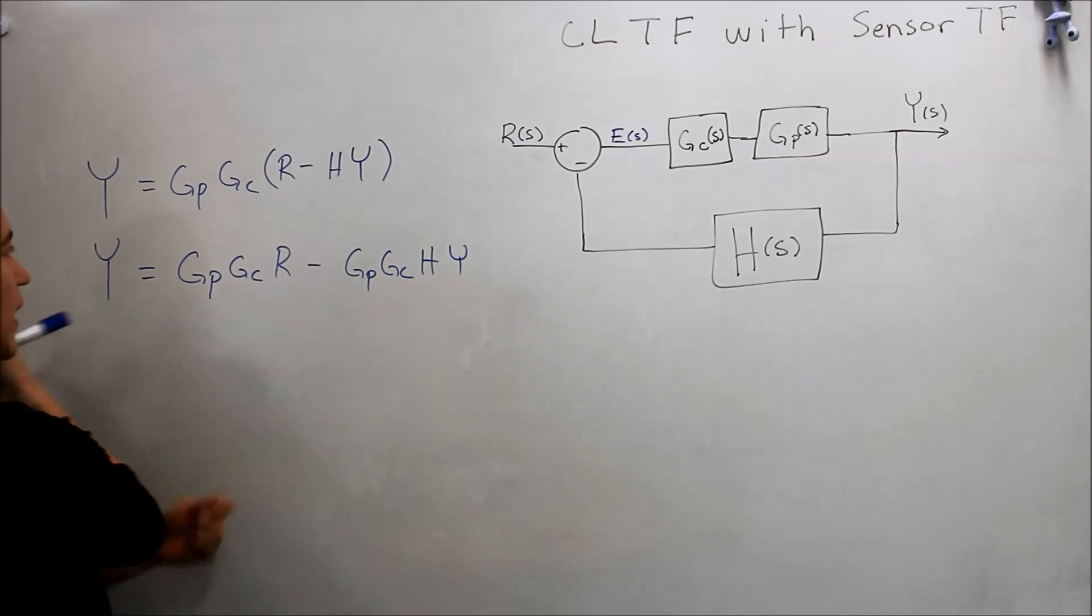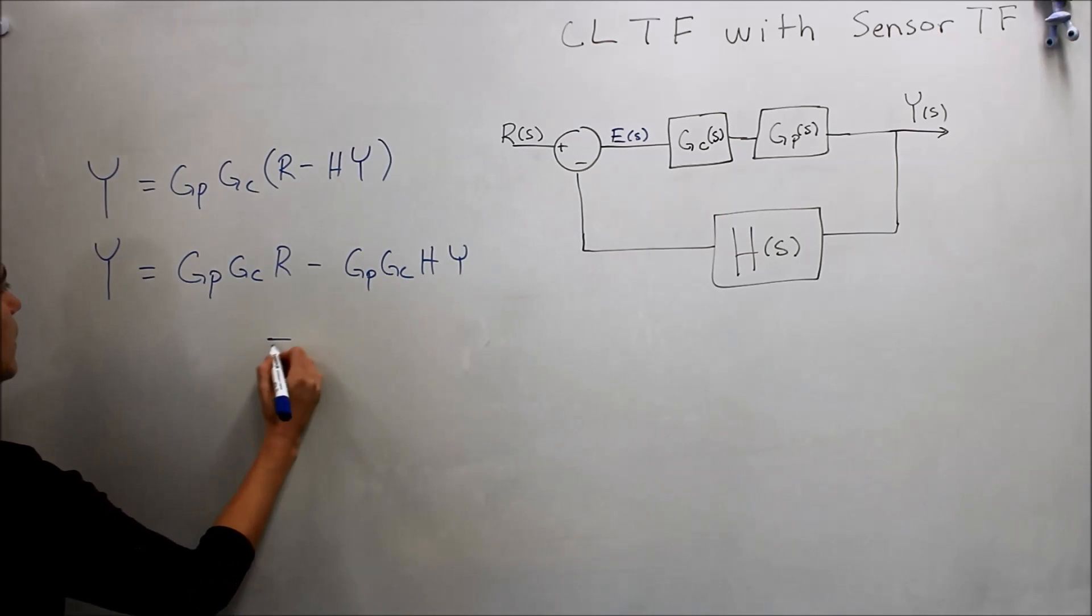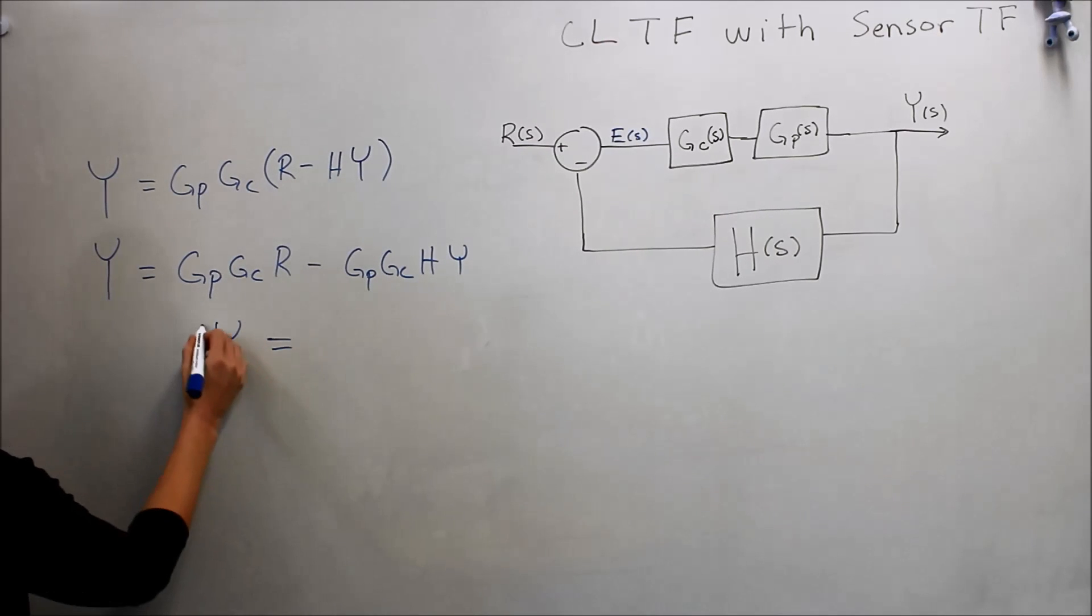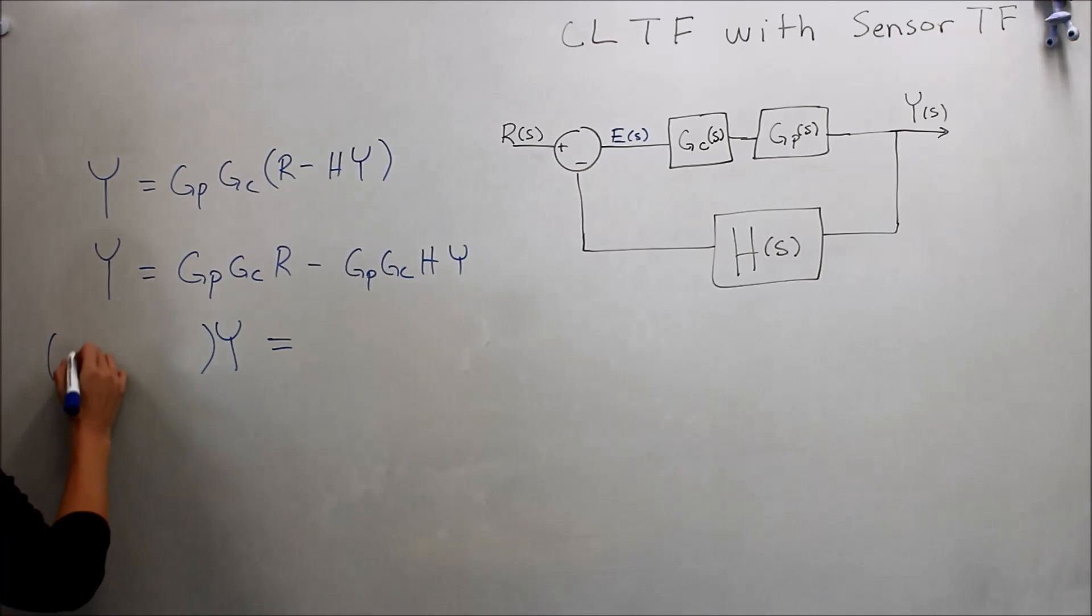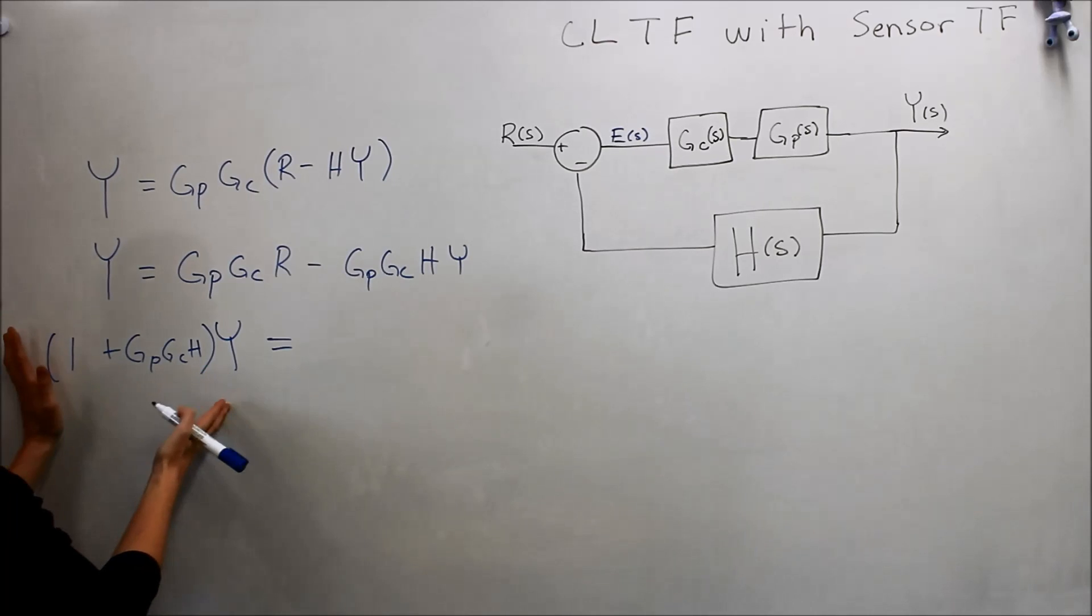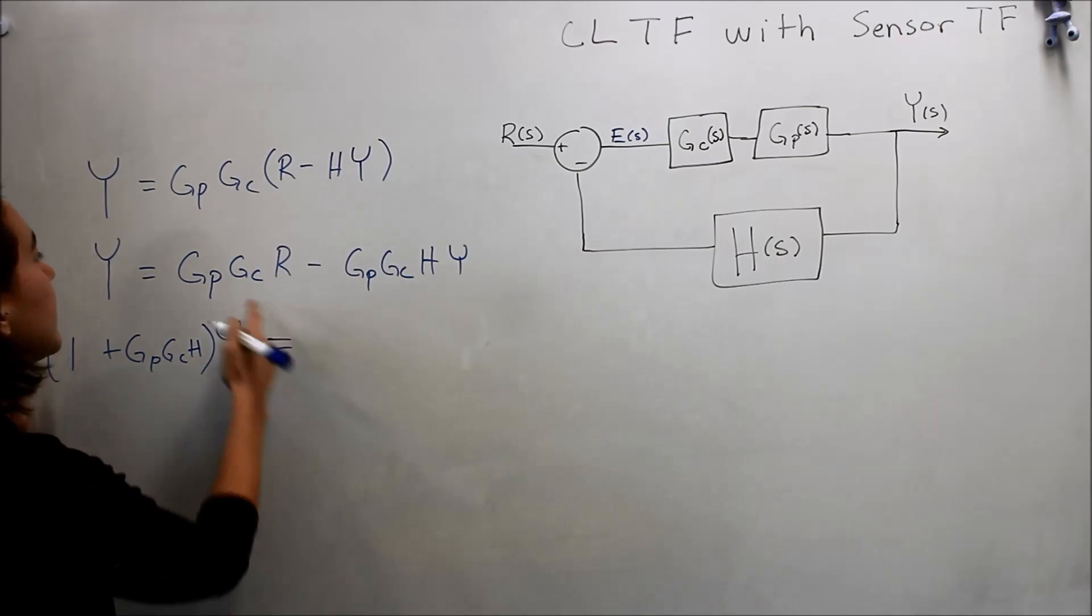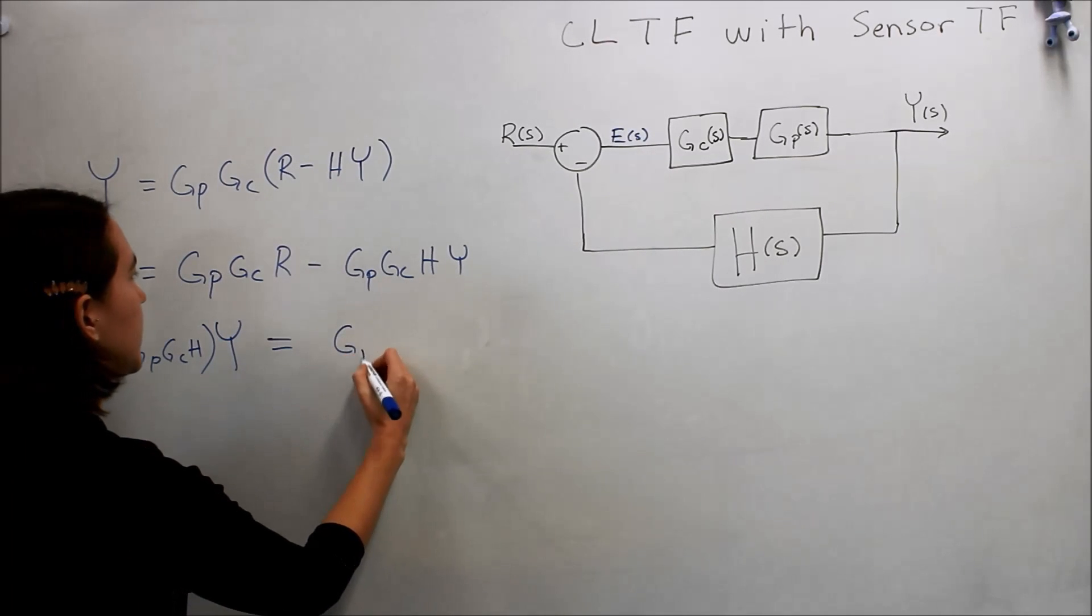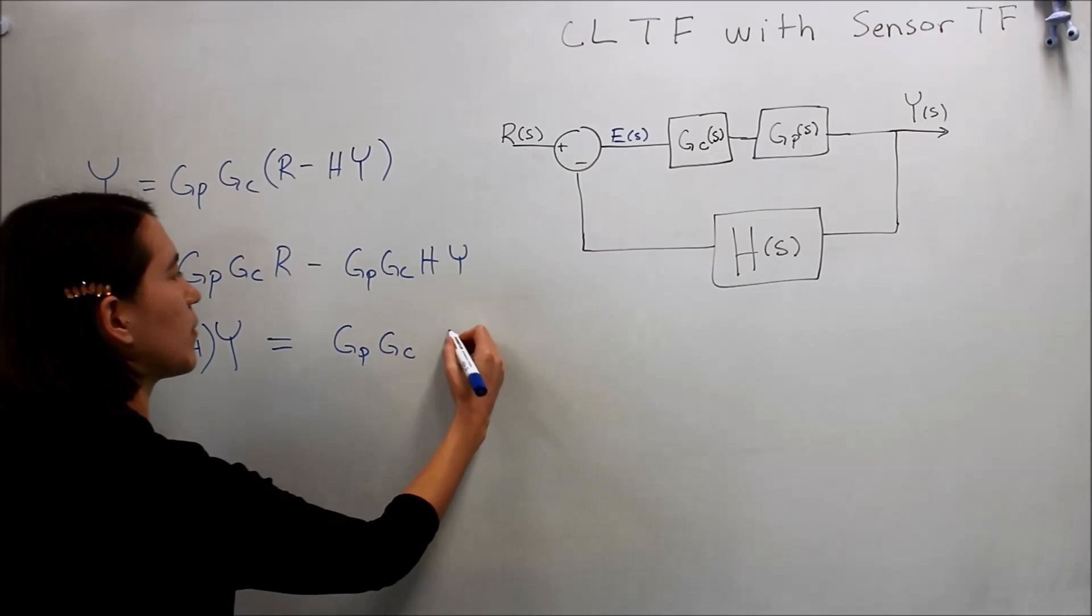We can move these y's over and we'll get y times one plus gp gc h, which is going to become our denominator. And then here we still have gp gc multiplied by r.